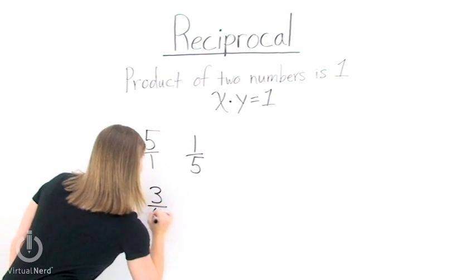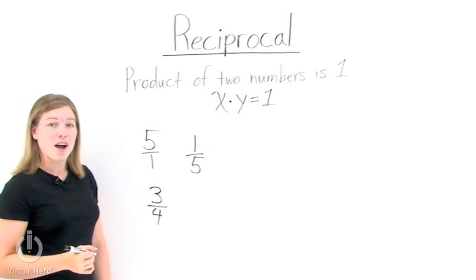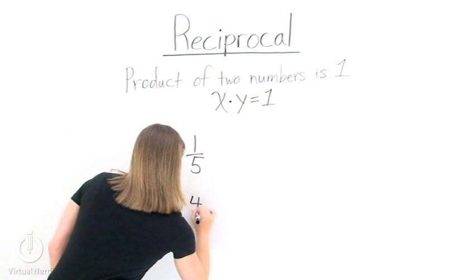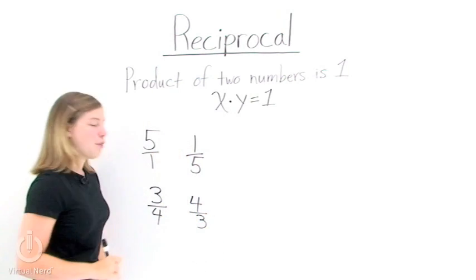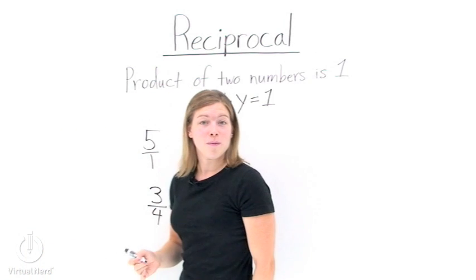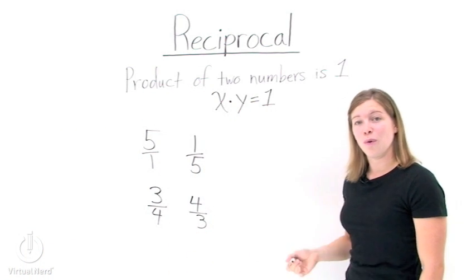So find the reciprocal of 3 fourths. Well, all we need to do is flip over the fraction. 3 fourths and 4 thirds are reciprocals of each other. If we multiply them together, we'll get 1.